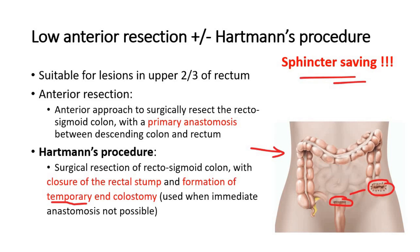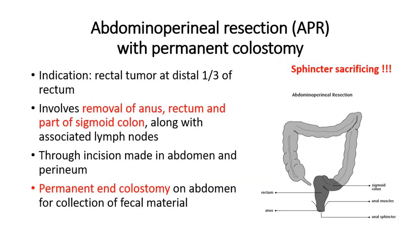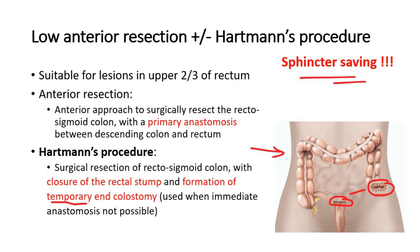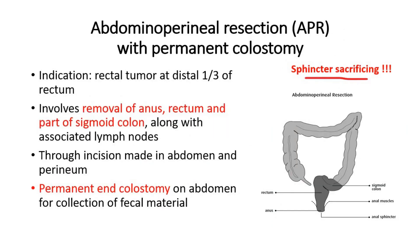Abdominal perineal resection (APR) sacrifices the anal sphincter and is indicated for rectal tumors at the distal one-third of the rectum. This surgery removes the anus, the rectum, and part of the sigmoid colon, along with the nearby lymph nodes, through incisions made in the abdomen and perineum — making it a two-step surgery. Unlike anterior resection and Hartmann's procedure which form a temporary colostomy, APR results in a permanent end colostomy. As shown in the picture, the entire anus, rectum, and part of the sigmoid colon are removed.